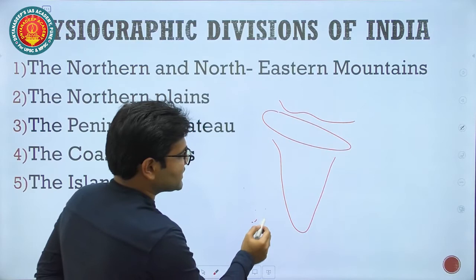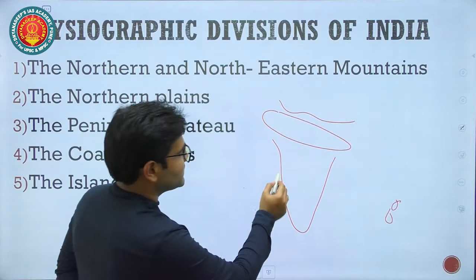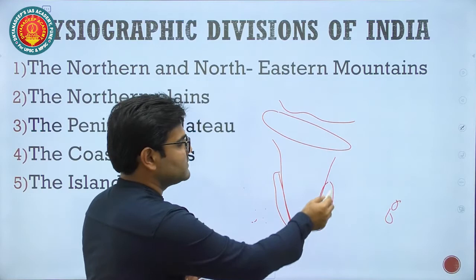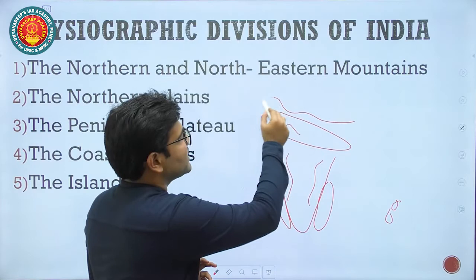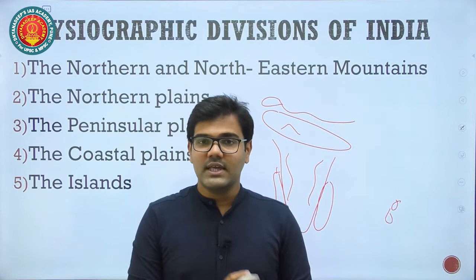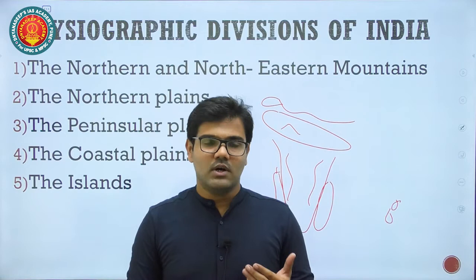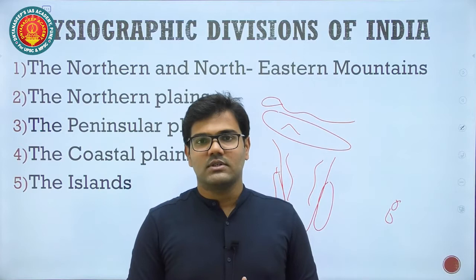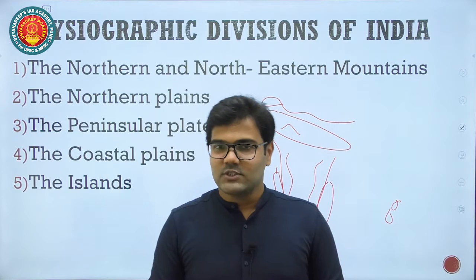The fourth division is the coastal plains — including the Konkan region in Maharashtra, Goa, Karnataka, Kerala, and the Tamil Nadu coast. The fifth division is the islands — Lakshadweep Islands and the Andaman and Nicobar Islands. In detail we will compare each physiographic division, study their rock patterns, origin, and which is the largest physiographic division of India.